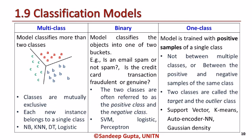The binary classification model classifies objects into one of two types. For example: is an email spam or not spam? Is a credit card transaction fraudulent or genuine? The two classes are often referred to as the positive class and the negative class. Some of the widely used classifiers for a binary classification model are support vector machine, logistic regression, and perceptrons.